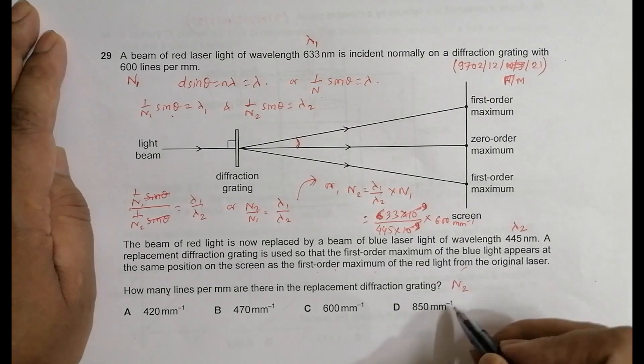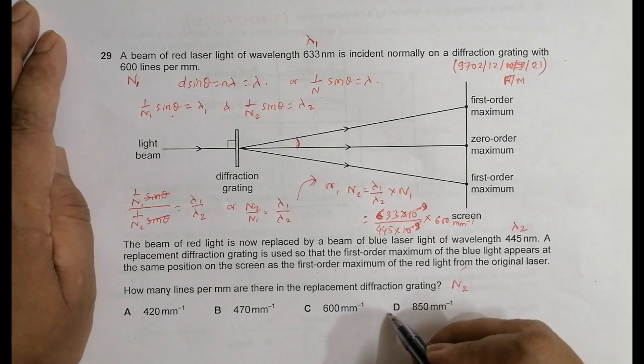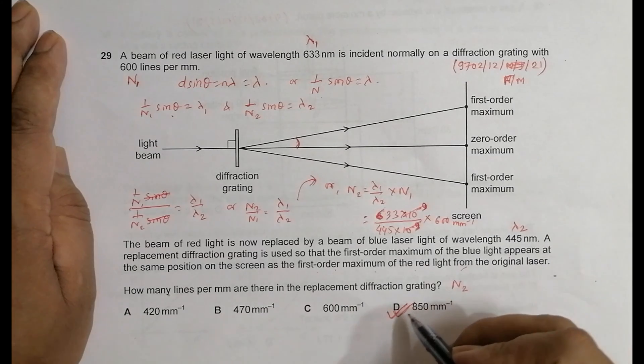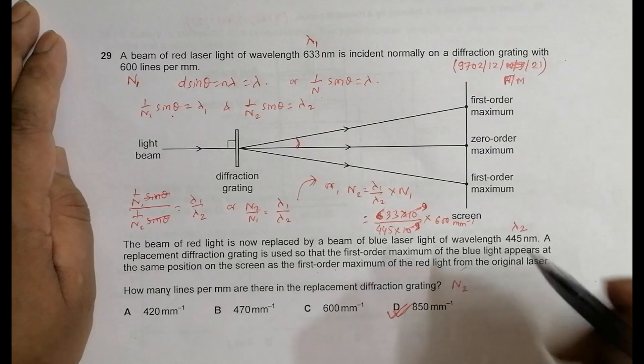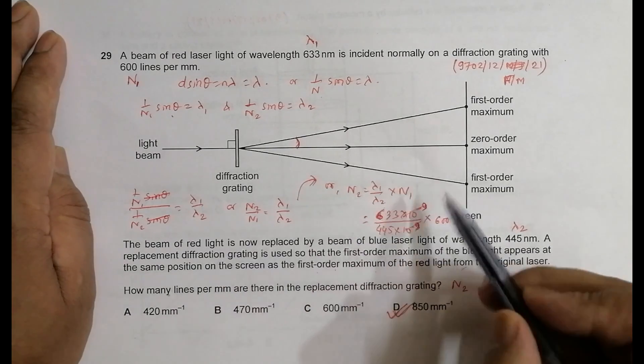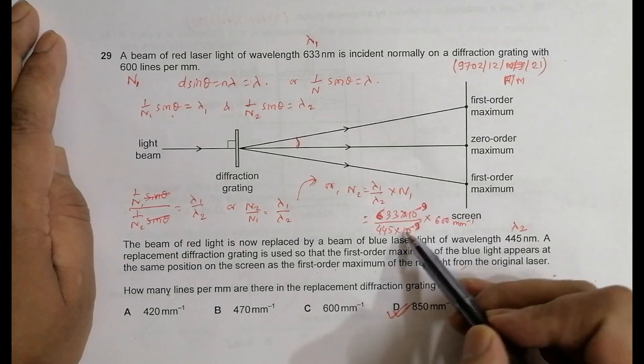If I round it off, it is 850. So I have choice number D as the correct choice, which is 850.48 something like that. So our correct choice should be 850 per millimeter.